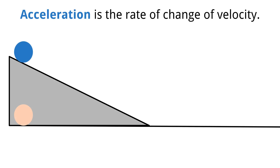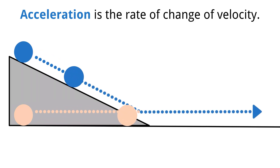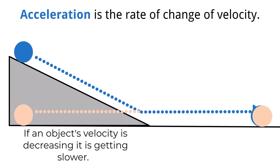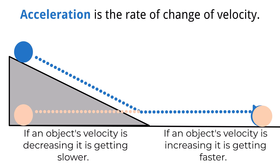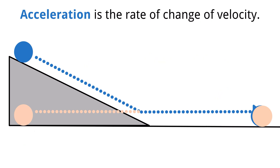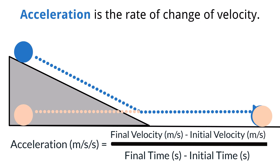The third important motion value to be familiar with is acceleration, which is the rate of change of velocity. Acceleration is a vector quantity with a numerical value and direction that measures how much the velocity of an object changes over a period of time. This means when an object's velocity changes, the object is considered to be accelerating. An object's velocity can change by either decreasing or increasing. If velocity is decreasing, the object's position is changing less and less over time — the object is getting slower. If velocity is increasing, the object's position is changing more and more over time — the object is getting faster. In both cases, the object is accelerating because the value of its velocity is changing.